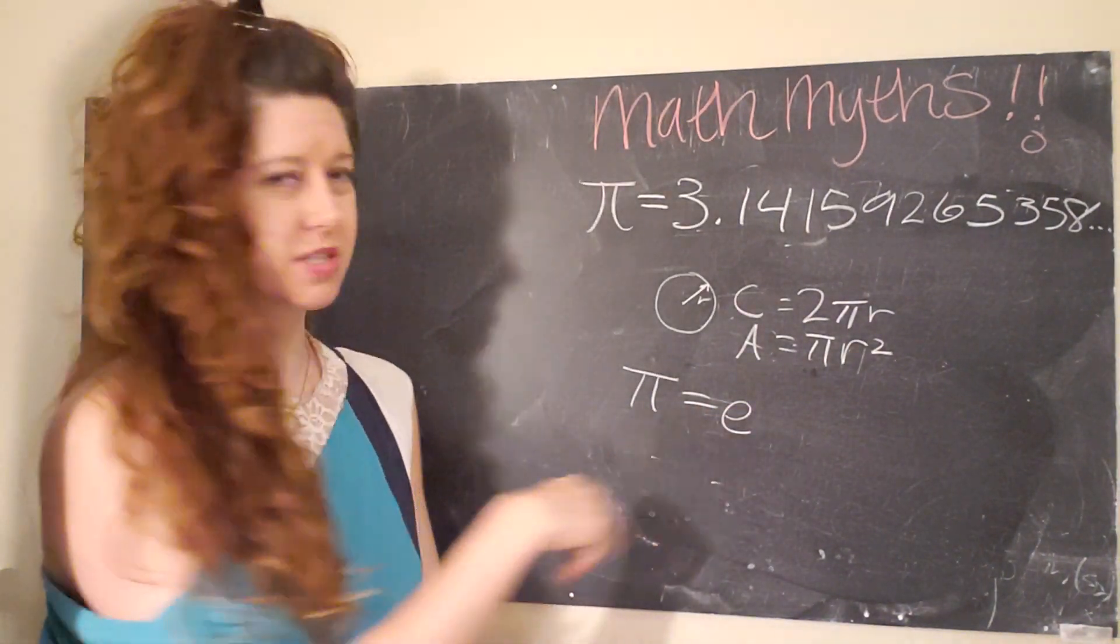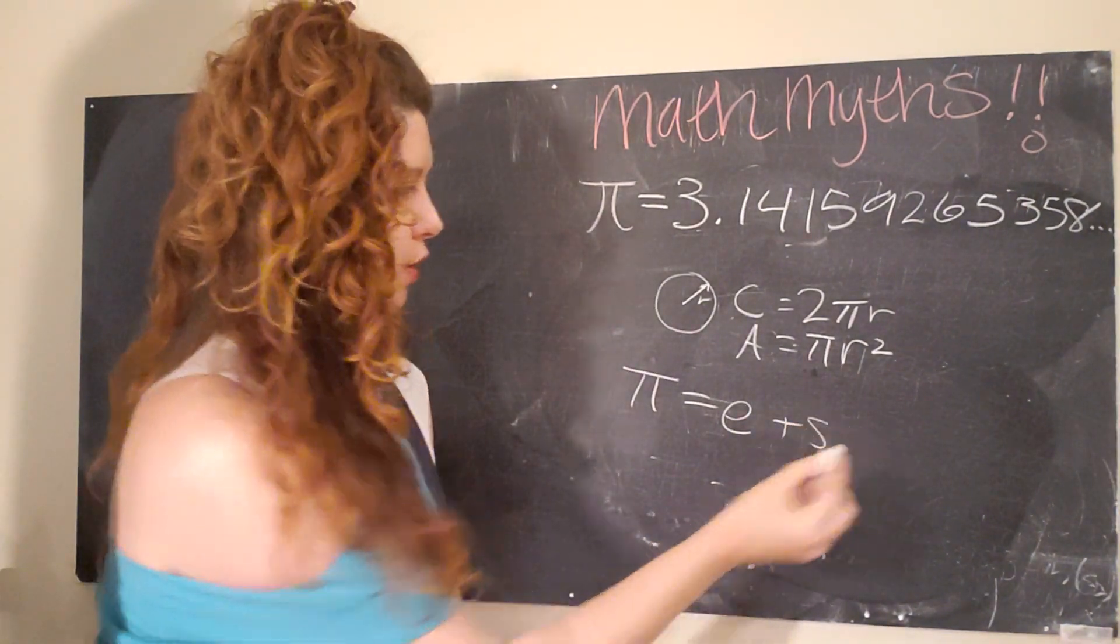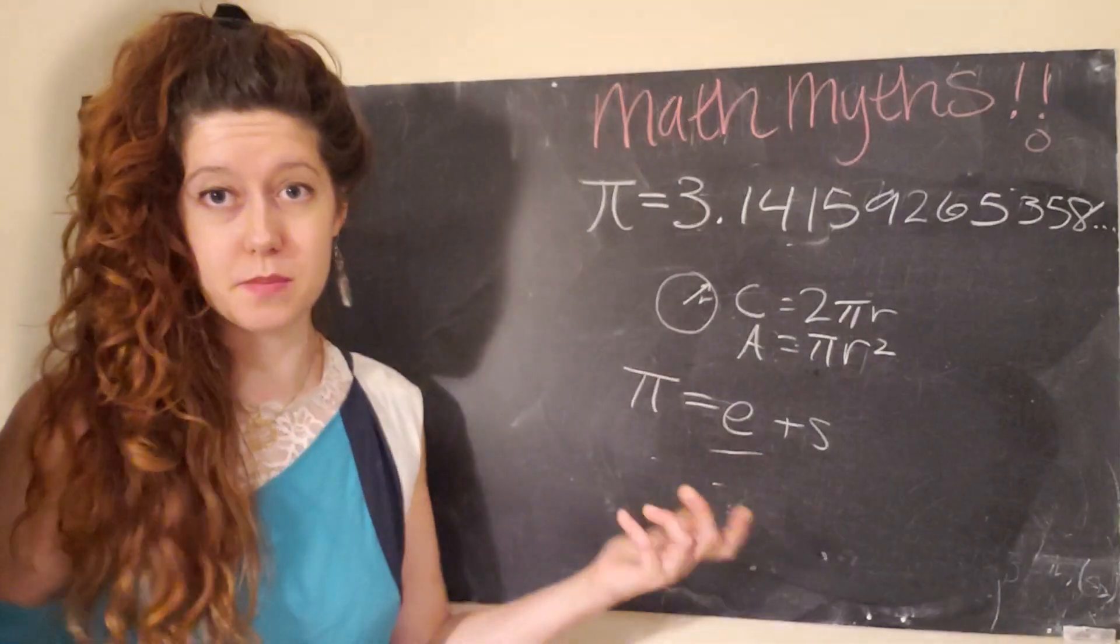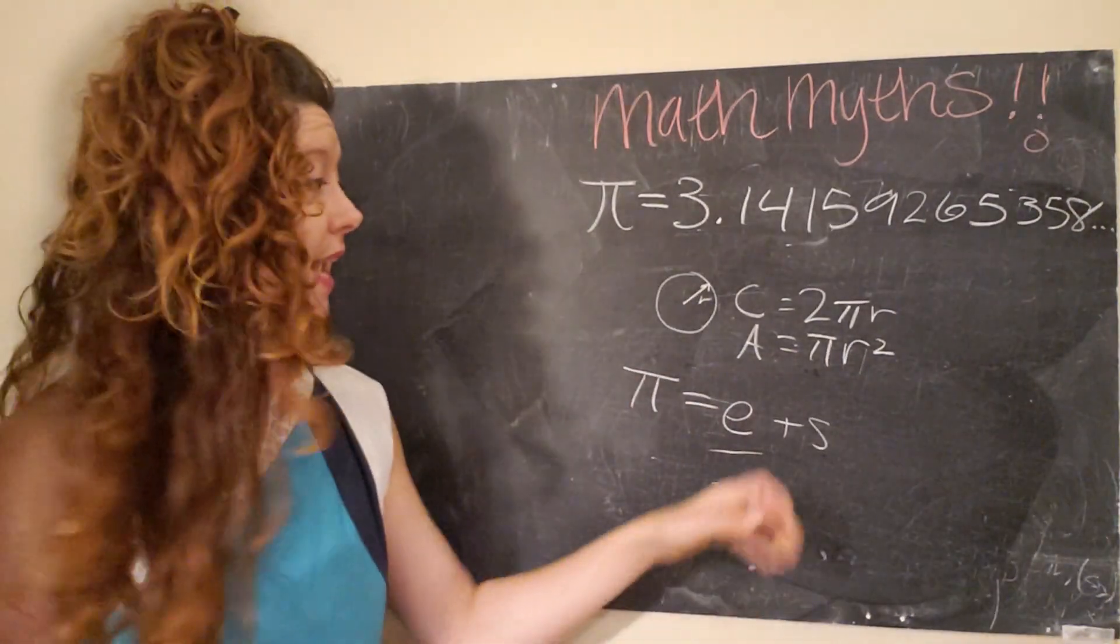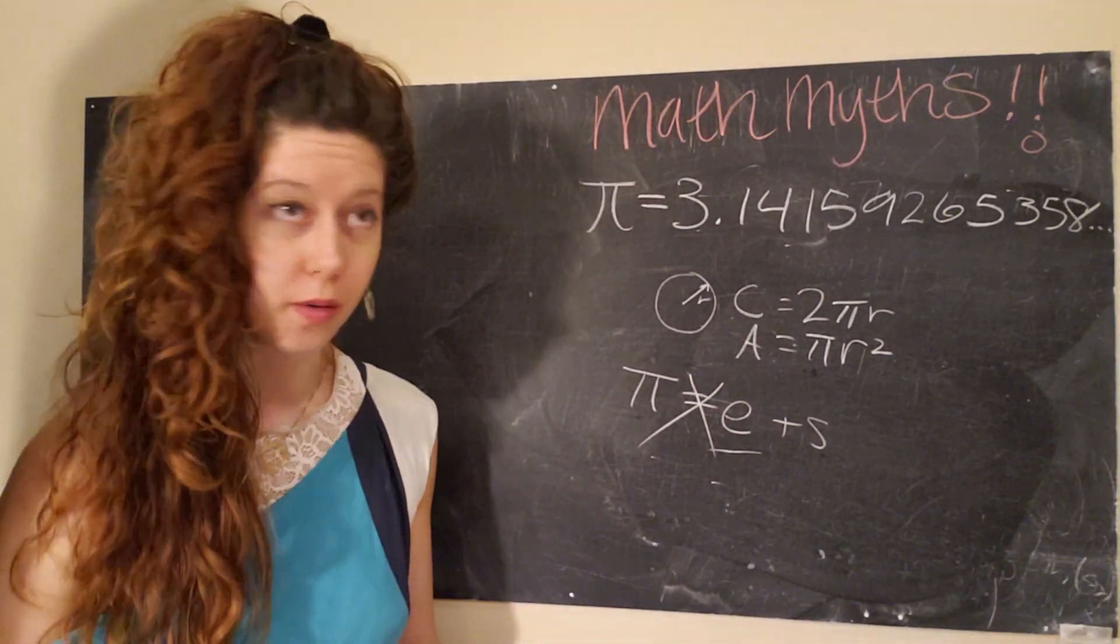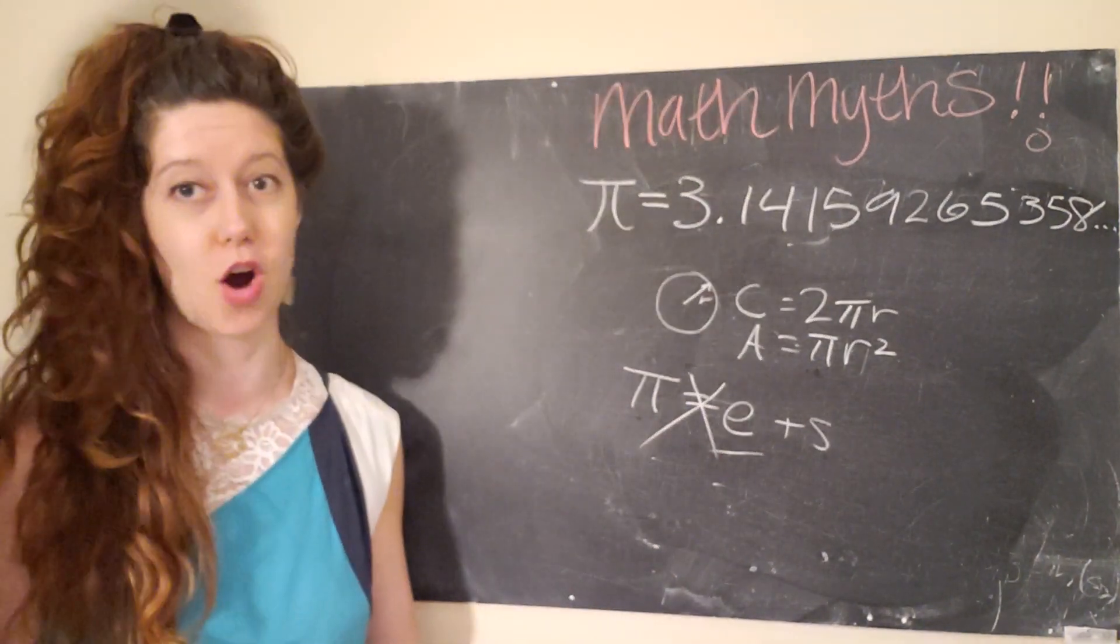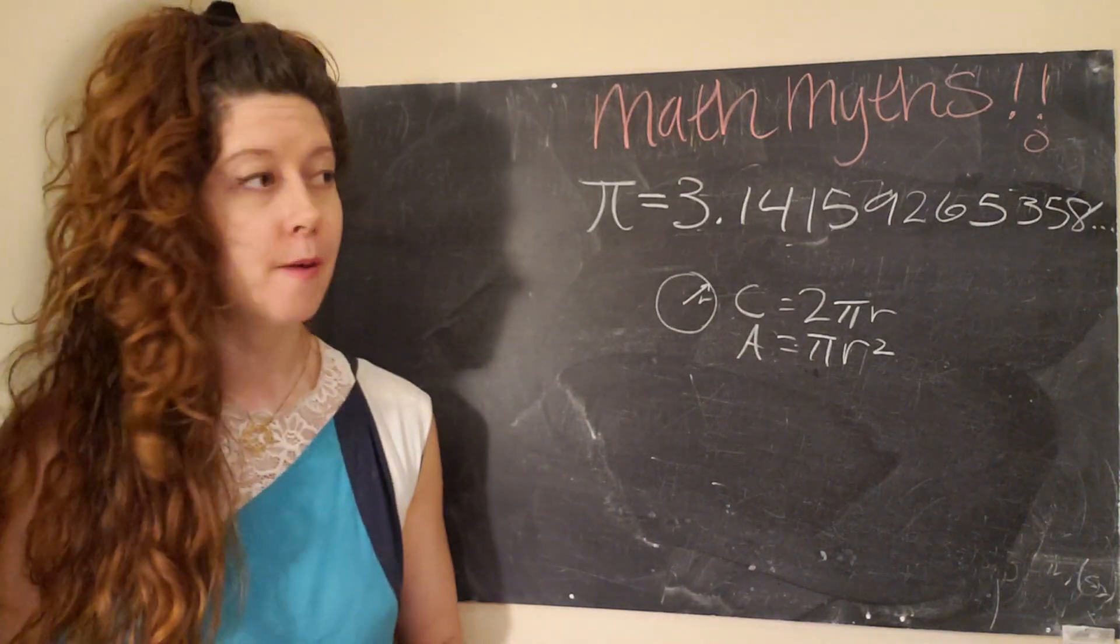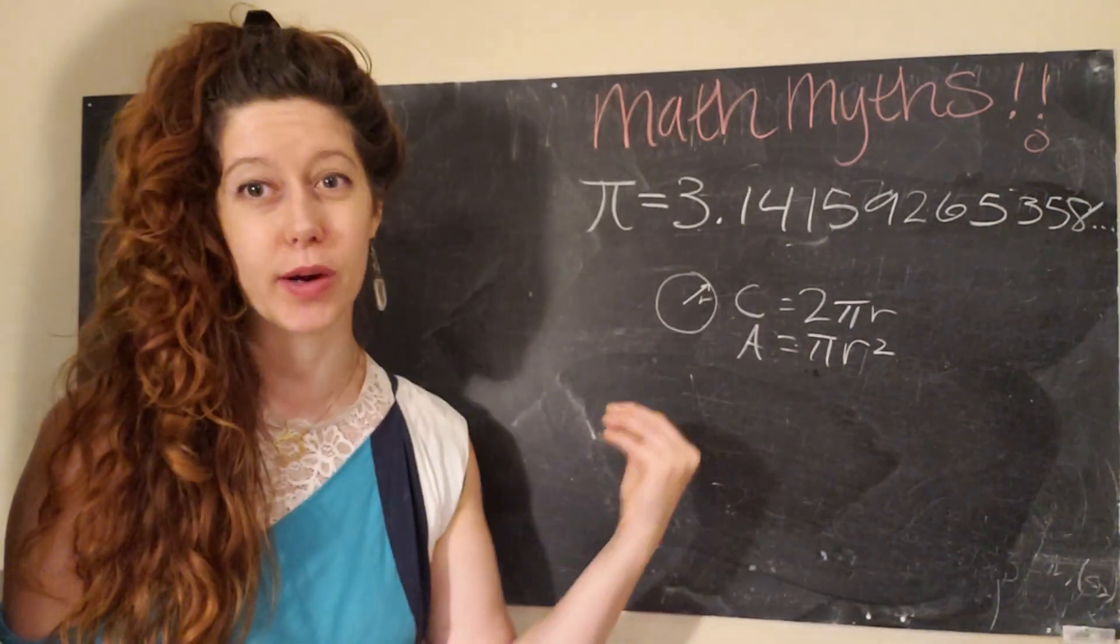then we could say that pi was the sum of e and some sort of finite subset. But then all of a sudden, our irrational number becomes represented by a finite sequence. And that means that pi would not be irrational. But it is definitely irrational. And so therefore, this cannot be true. And that's actually true of every irrational number. No irrational number can contain any other irrational number.